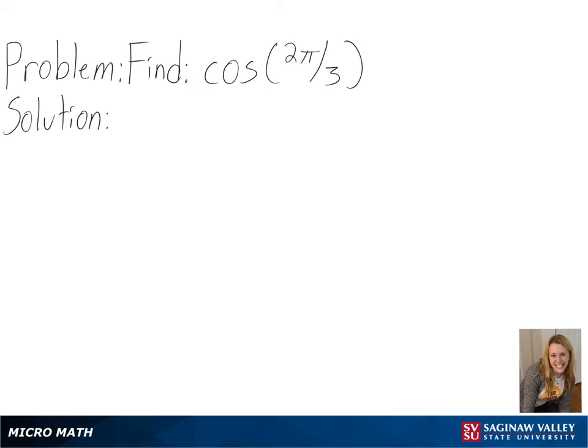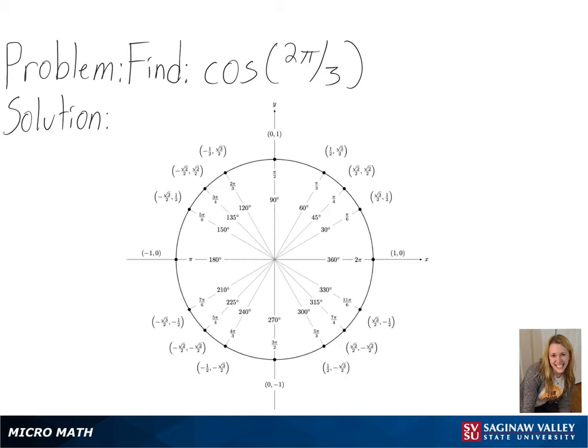Our problem is to find cosine of 2π over 3. To solve this, we will be using a unit circle. We will start at (1, 0) and then move counterclockwise until we have traveled the distance of 2π over 3.